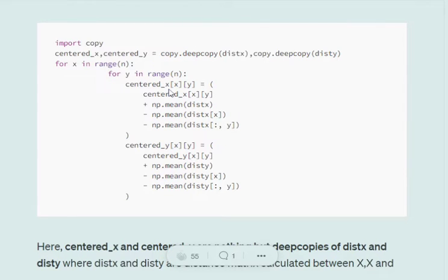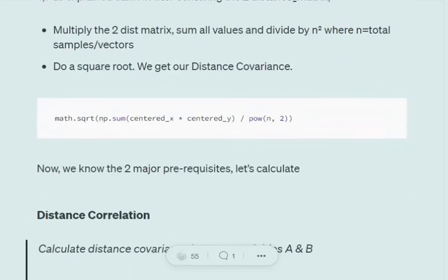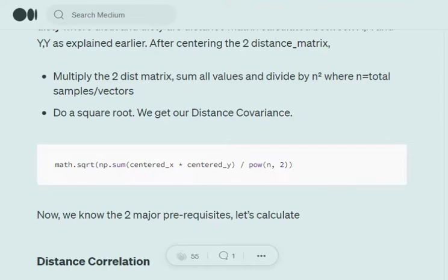Once we calculate the distance matrices for self-pairs X,X and Y,Y, we center the two distance matrices. For each value present in the distance matrix for X and Y, we add the mean of the full distance matrix, then subtract the mean of that particular row and the mean of that particular column for that cell. As you can see in this code snippet, we are looping over all values in the two distance matrices over n×n, where n is the dimension. Centered X and centered Y are deep copies of the original matrices with this centering applied.